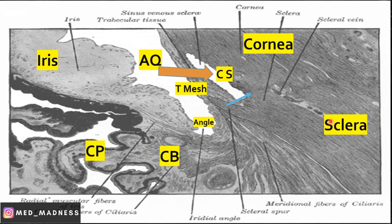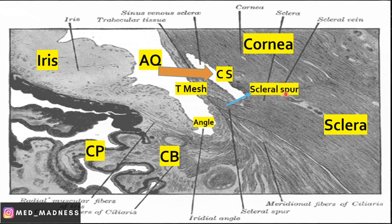In this histology picture, you can see the sclera continuing as the cornea, and this is the limbus. Here you can appreciate the canal of Schlemm, and this is the anterior chamber where you can see the aqueous humor draining into the canal of Schlemm through the trabecular meshwork.